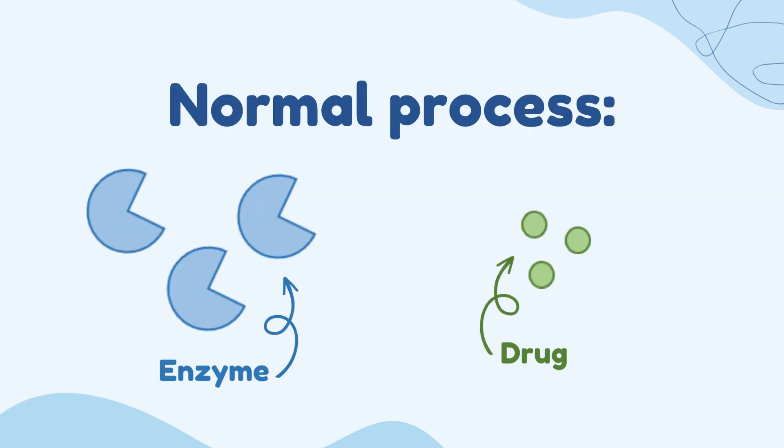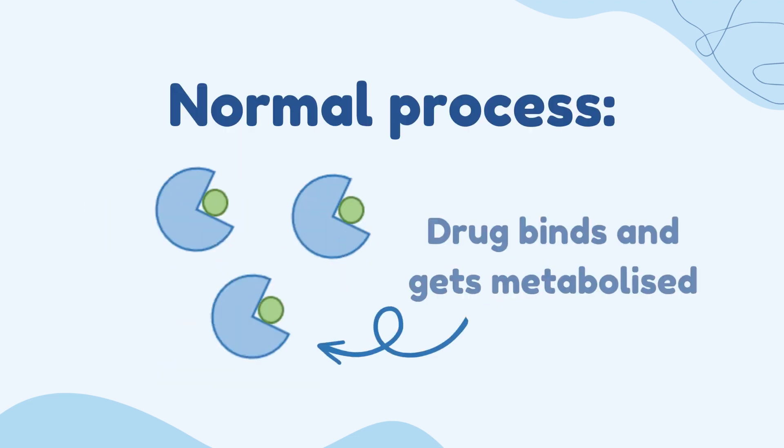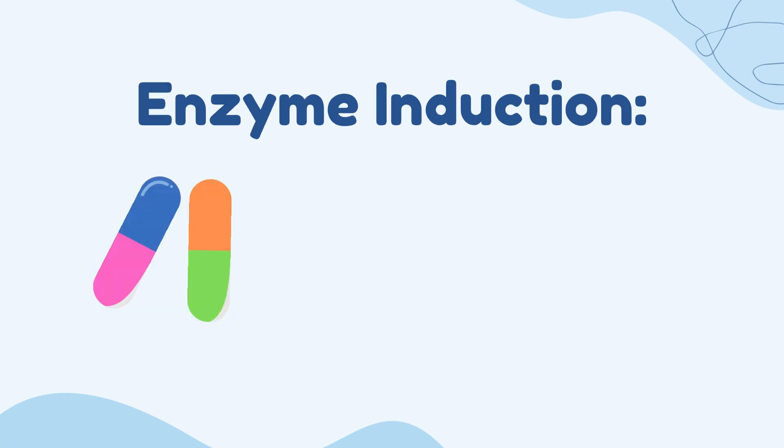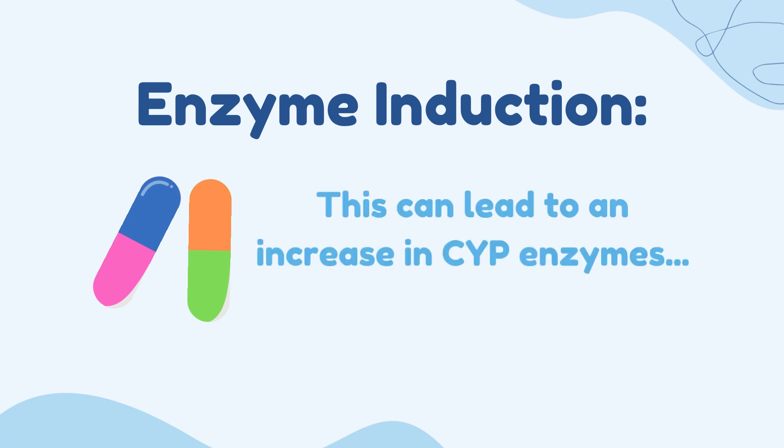In a normal process, the drug typically binds to the CYP enzyme and gets metabolised. However, sometimes when certain drugs are taken together, or if a drug is an enzyme inducer, the drug increases the number of CYP enzymes.